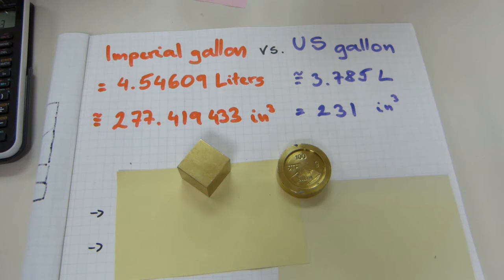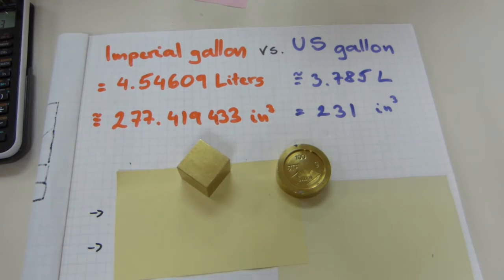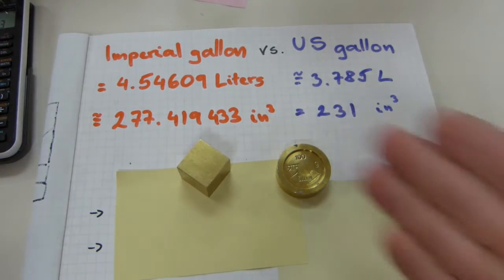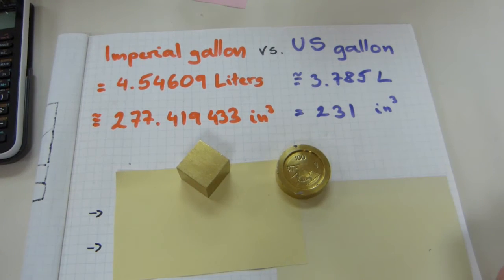What happened in 1824 is that the imperial gallon was created along with the imperial system. So, in 1824, they redefined the gallon, which the U.S. did not follow, because they broke away in 1776, so the 1824 changes and updates to the gallon were not copied, and they kept the old gallon.